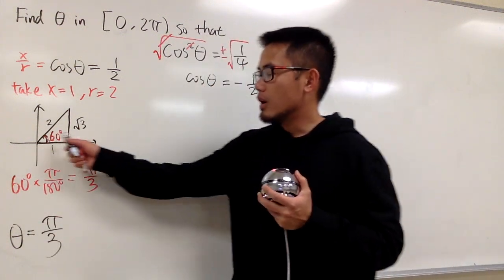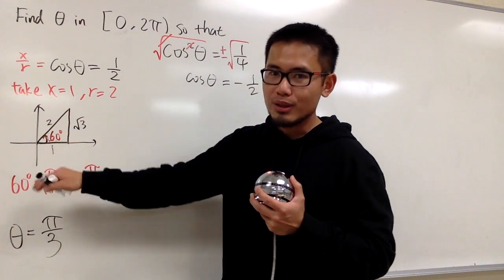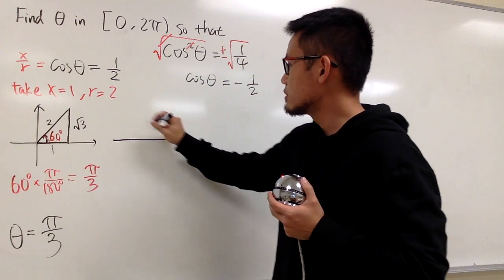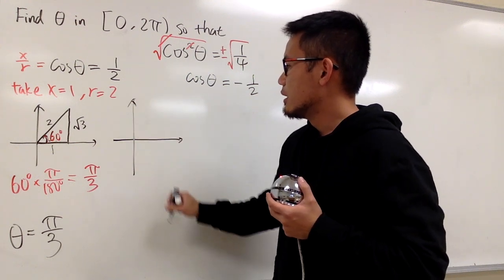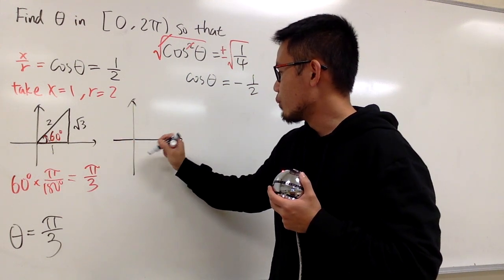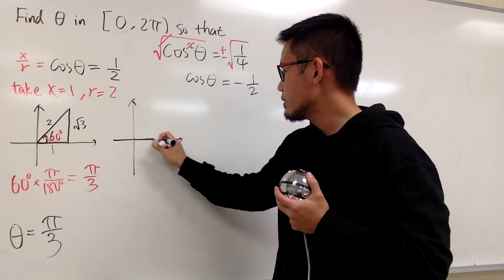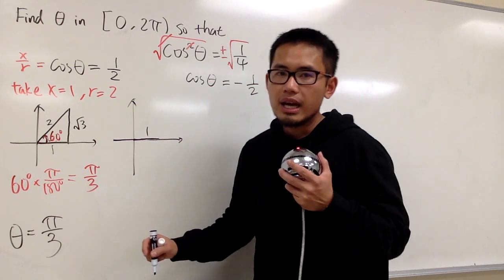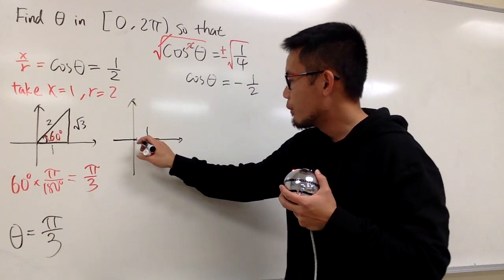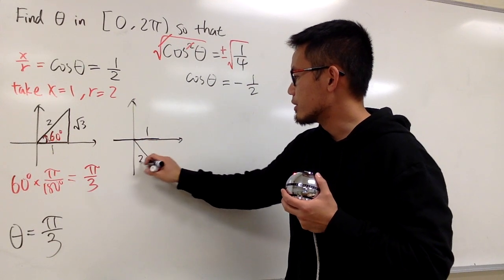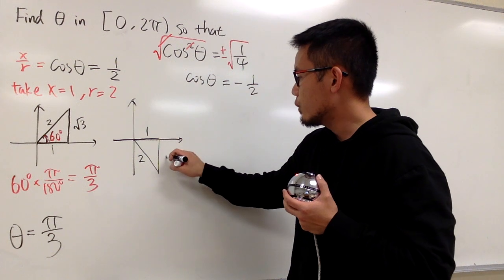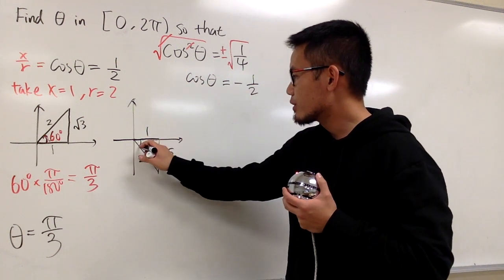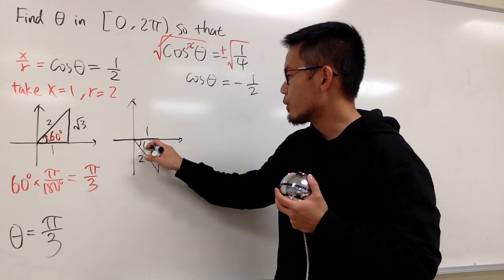In fact, I could have drawn the triangle down below. So I'll do that right here as well. So once again, here is my 1 for the x value. This is my 1 like this. And for the r is equal to 2, I will just go down below like that. This is my 2. And now this is square root of 3, but technically it's minus.